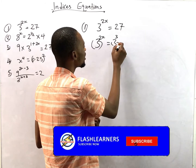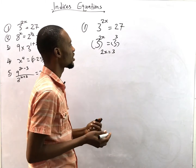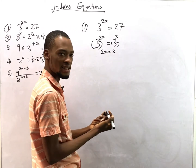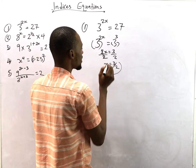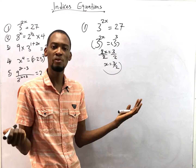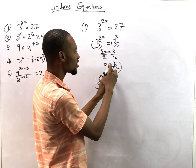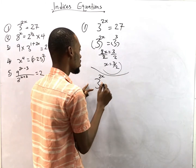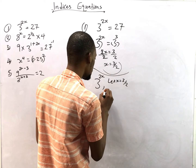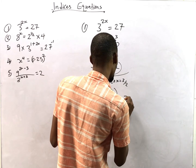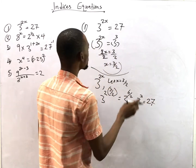Since the bases are the same we can equate the powers, so 2s = 3. We divide both sides by 2, giving s = 3/2. To verify: 3^(2 × 3/2) = 3^(6/2) = 3^3 = 27. That confirms our answer is correct.